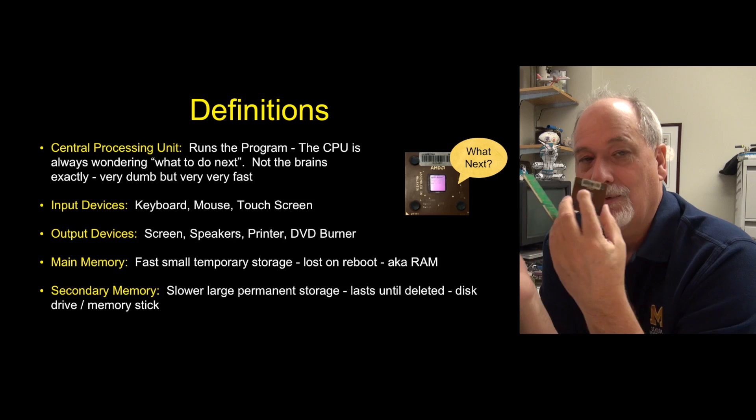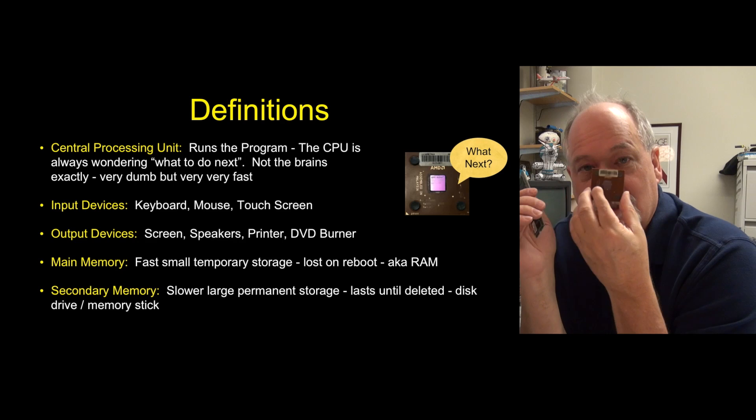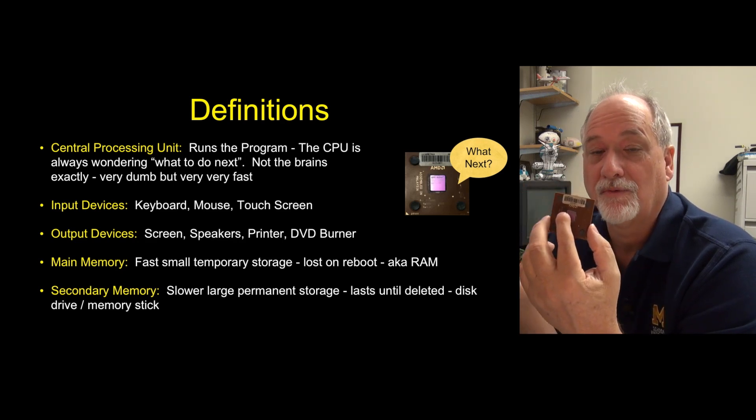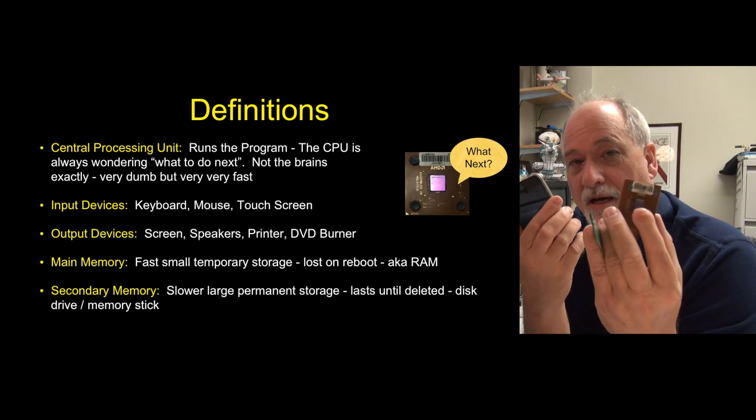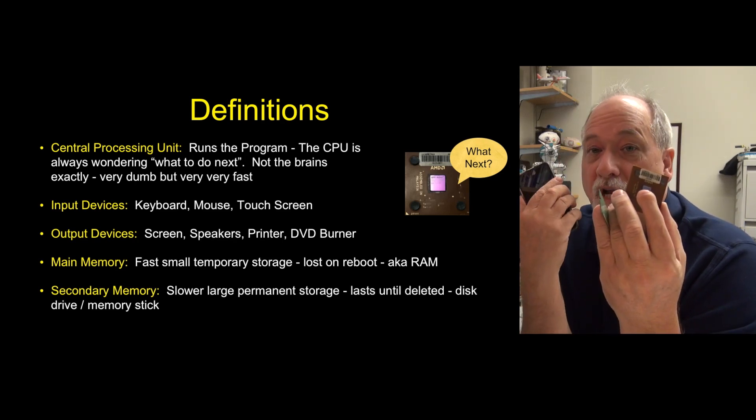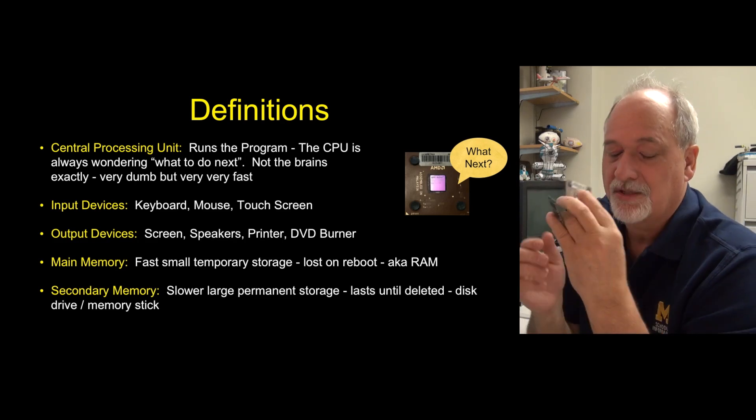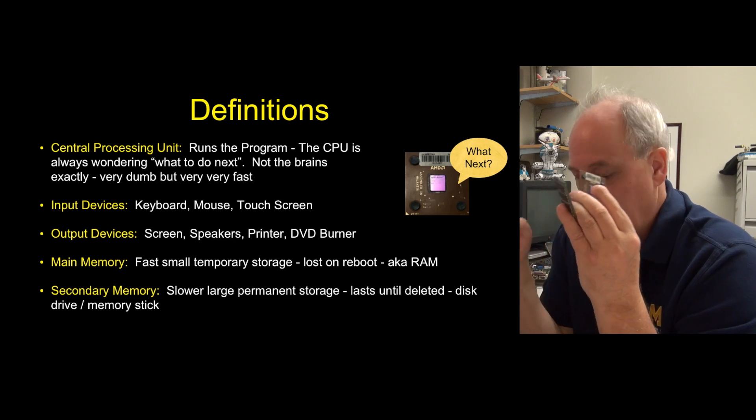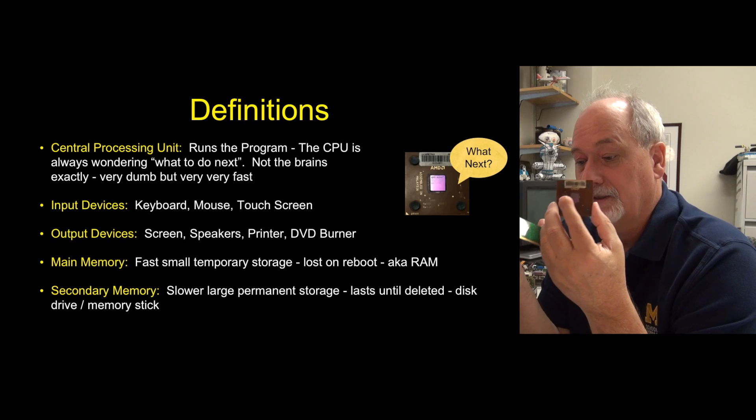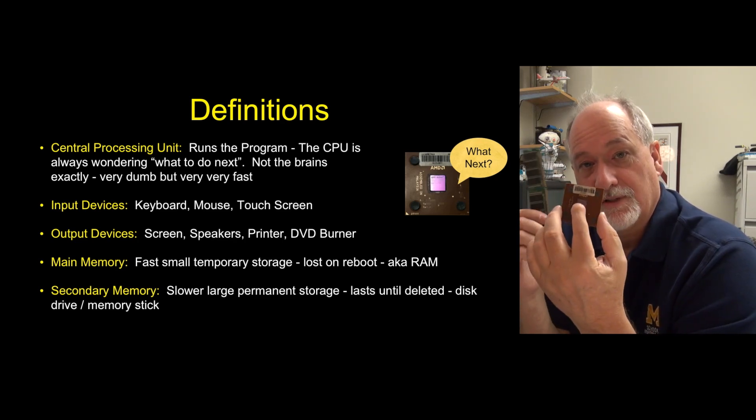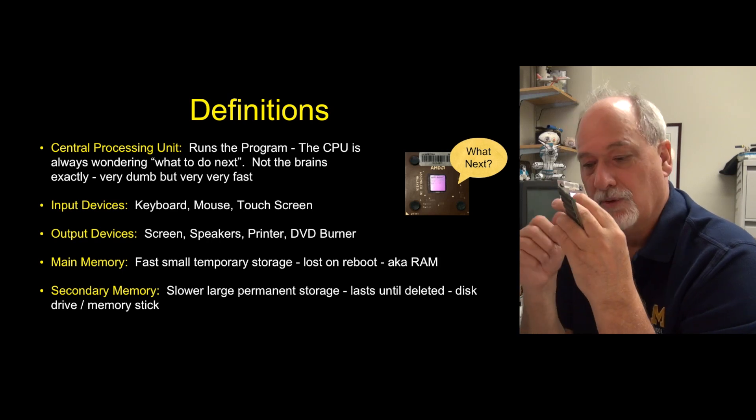And so we compensate for the lack of intelligence of this thing by us writing really good software that runs really fast. And so voice recognition on things like phones is possible because computers have so much storage and they run so fast and the algorithms that do voice recognition are finally starting to work. Input devices like keyboards and mice and pens come in. Output devices are like the screens that we see. The main memory is the fast part of the computer that stores all the programs and the secondary memory is the permanent storage.